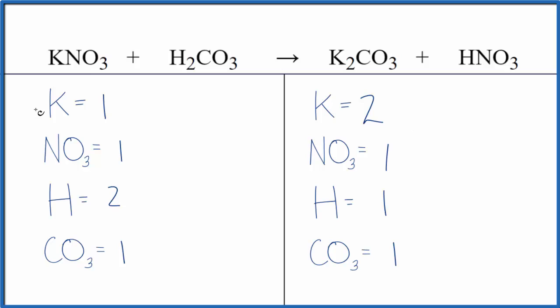Why don't we start out by balancing the potassiums? We could put a two here, one times two, that would balance the potassiums, but now we have two times the one nitrate. So we'll have two of those. If we put a two over here on the nitric acid, one nitrate times two, that would balance the nitrates.